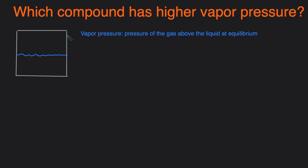Let's say we have a closed container and we have some liquid. Some of these liquid molecules are going to have enough energy to escape and become a gas. You're going to get some gas above the liquid, and vapor pressure is just the pressure of that gas above the liquid. So how do we determine which compound has a higher vapor pressure?